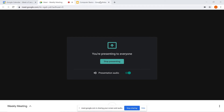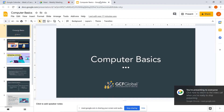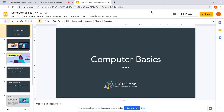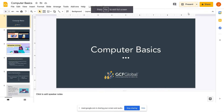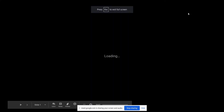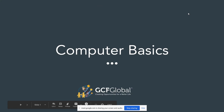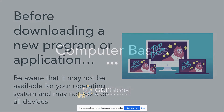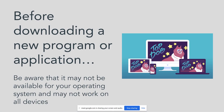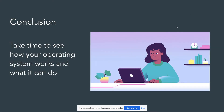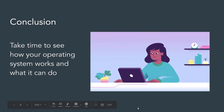Select the tab that has your Google Slides presentation. Next, click the Present button. You can now carry out your presentation while the people in the call watch it on their own screens. When you're finished presenting, click the Stop Sharing button.